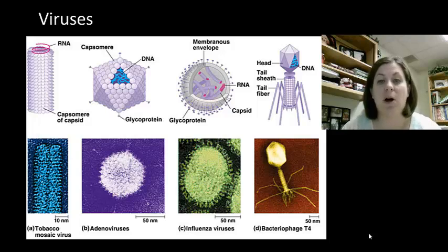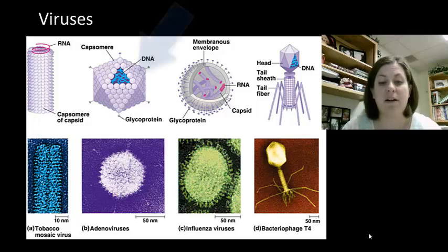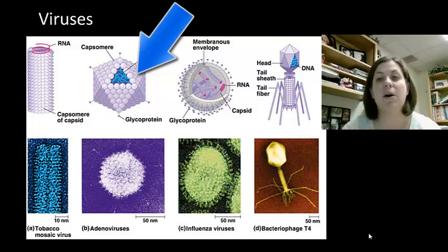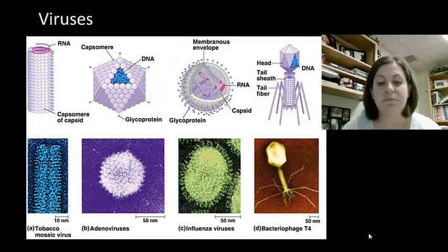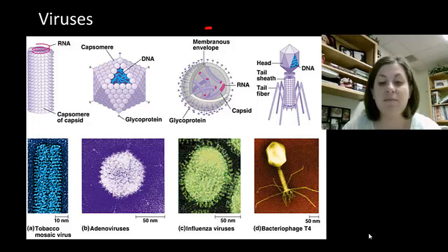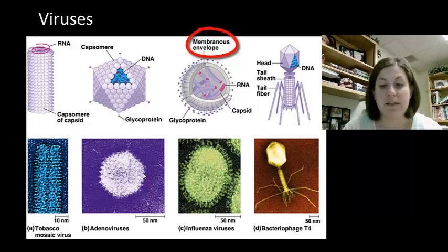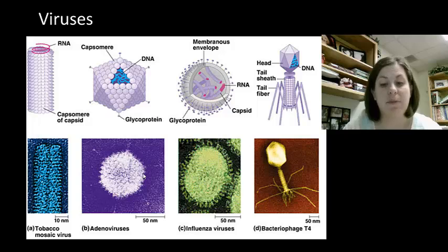Viruses are composed of two main parts: the covering and the inner core. This covering of all viruses is called a capsid, and it's composed of proteins. You can see a capsid in several of these examples. This capsid provides the shape of the virus. Some viruses also have an envelope as part of their covering, as you can see here. These are seen in animal viruses.